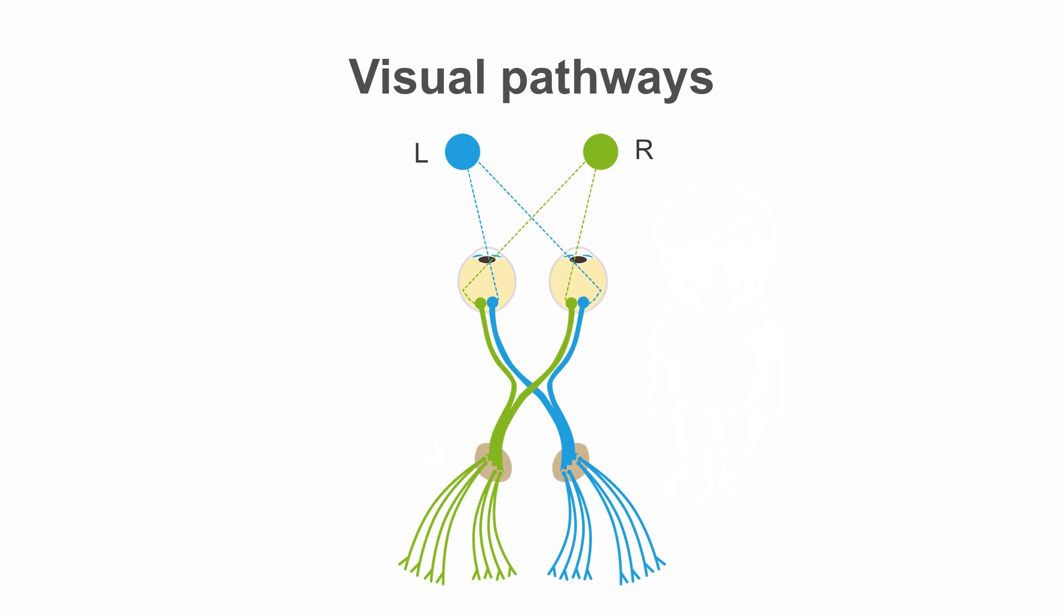Visual field defects are common with occipital lobe lesions. Before looking at these in more detail, let's briefly review the visual pathways. First-order neurons arise in the retina from rods and cones and then synapse with retinal ganglion cells, the second-order neurons.